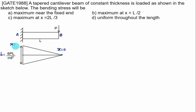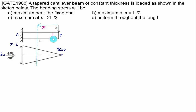We consider a section plane shown by a dotted line at a distance x from point B, and x is positive as we move toward the fixed end. At this section, the width is variable but the depth remains constant and equal to d. The depth throughout the section remains constant, but the width is continuously variable — let's call this width b1.